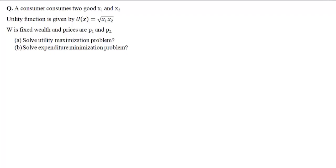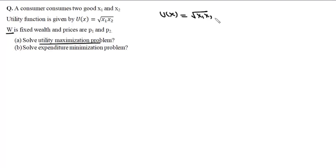Another problem where we can apply Lagrange's method is in utility maximization or expenditure minimization problems. We are given a utility function u(x) = √(x1·x2), where x1 and x2 are quantities of two goods. The first question is to solve the utility maximization problem, so our objective function is u(x) = √(x1·x2).